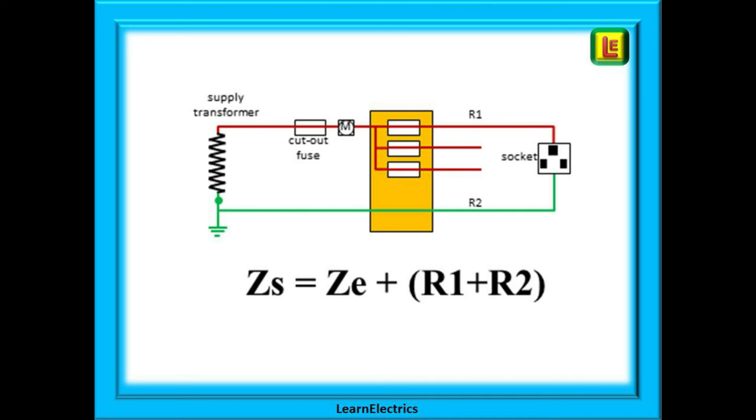So recalling Ohm's law, we know that if the resistance decreases then the current will increase. This means that the lower that we can make the resistance or impedance, then the greater the current that will flow. The greater the current, the quicker the fuse or breaker will disconnect the supply. The faster the disconnection time, the more chance a person has of surviving the electric shock.